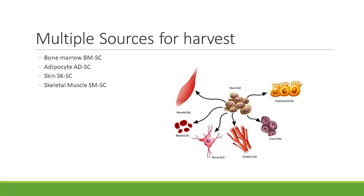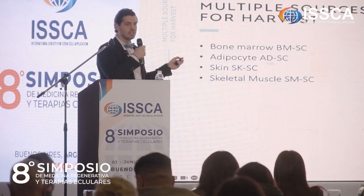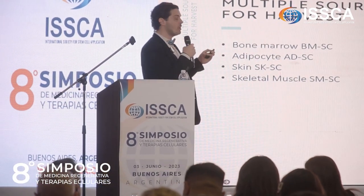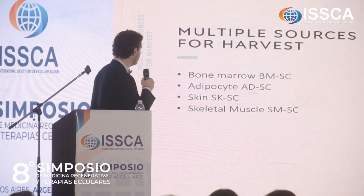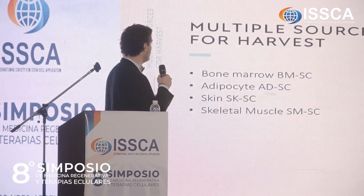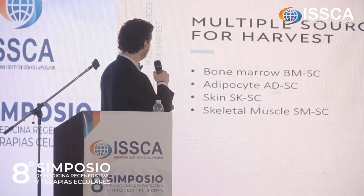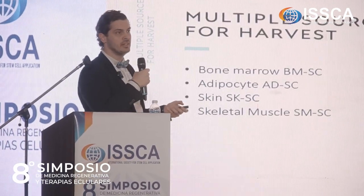There are multiple sources for harvesting mesenchymal stem cells. We can take them from bone marrow, adipocytes from fat tissue, skin, and skeletal muscles — we can isolate them from almost anywhere. However, adipose tissue from bone marrow is the easiest to isolate and use in clinical practice.